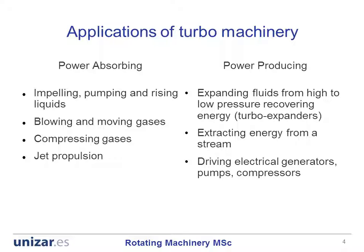Turbofan, turboprop and turboshaft engines all make use of power absorbing machinery. Power producing machinery are used to expand fluids from high to low pressures in a controlled manner. This usually takes place in petrochemical plants and these types of machines are usually called turboexpanders. They are also used to extract energy from any kind of stream, such as in wind turbines,